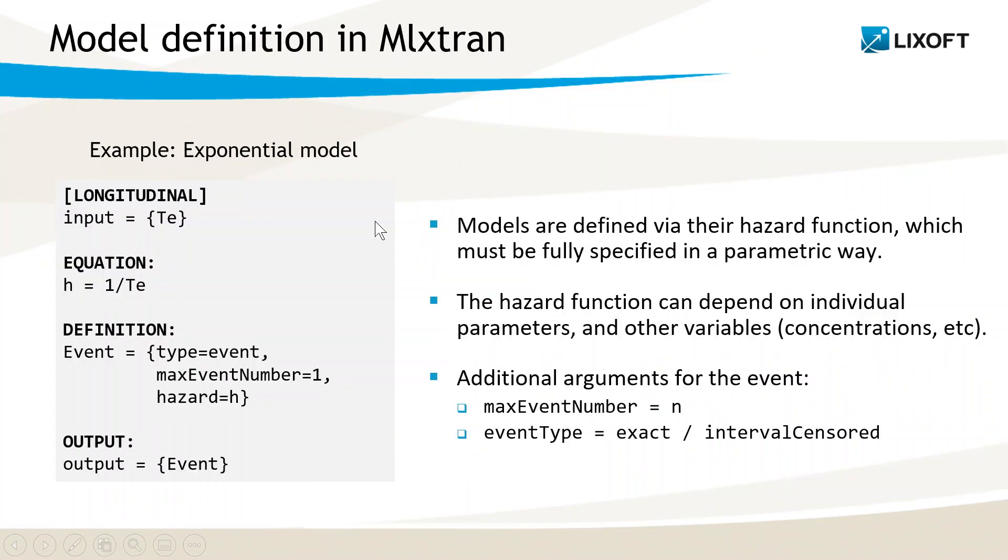The syntax to define the Hazard function in the structural model in Monolix is as displayed here. The Hazard function is simply defined in a block equation via an expression that typically depends on the input individual parameters and can also depend on time or other variables, such as drug concentration or tumor burden. The Hazard variable can have any name. Here it is named H. It is then associated with an event in a block definition.